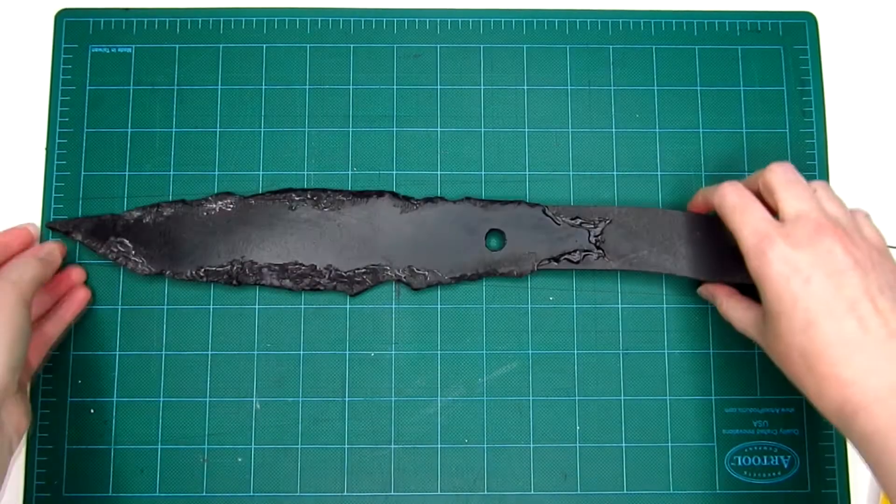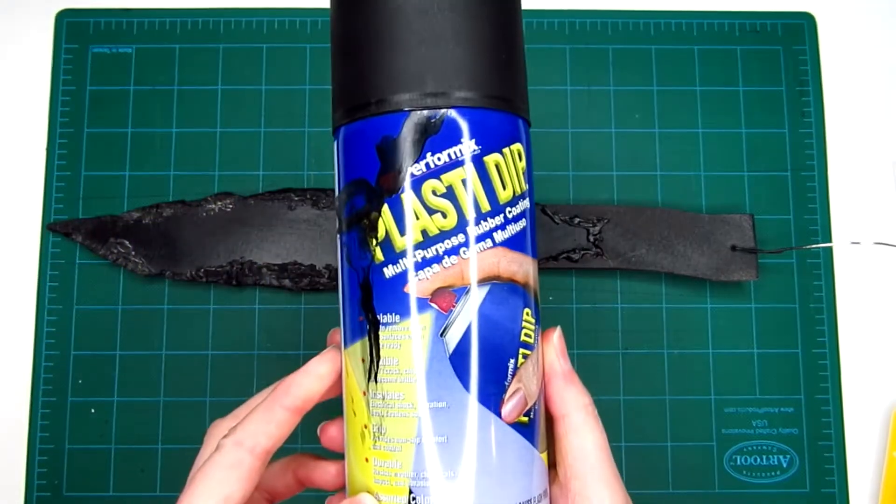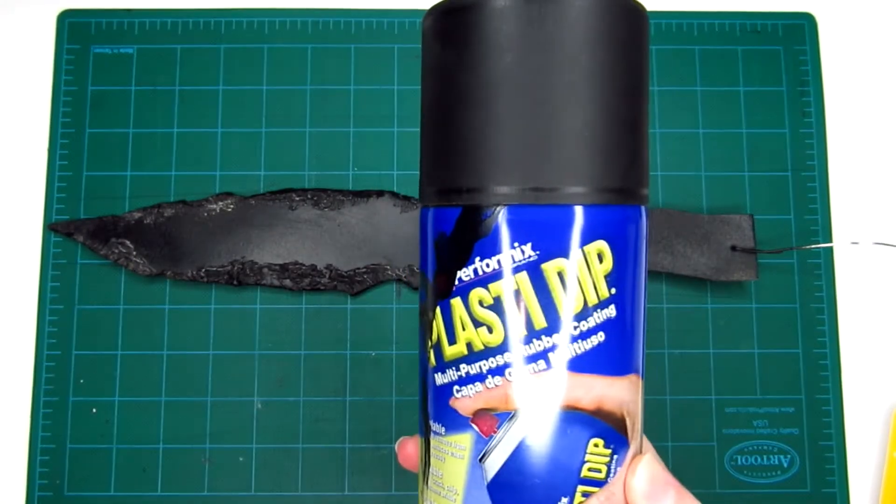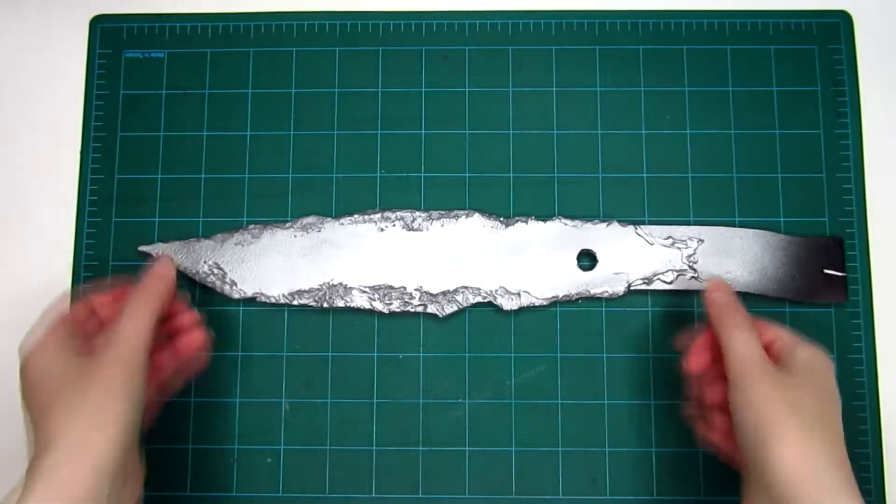This next step isn't necessary, but I sprayed my entire knife with Plasti Dip. It seals the foam for a better painting surface, as well as makes the knife even sturdier. But you can also use glue or Mod Podge to seal it.